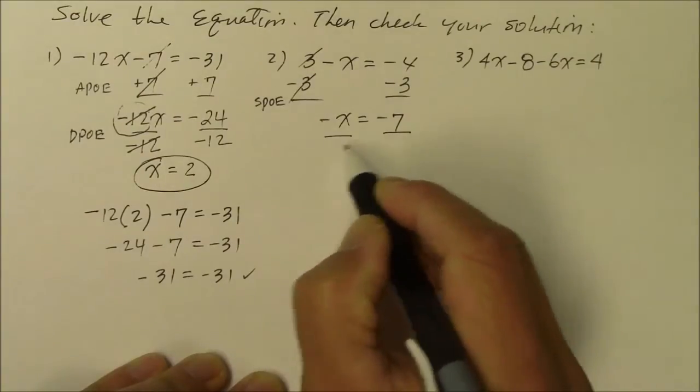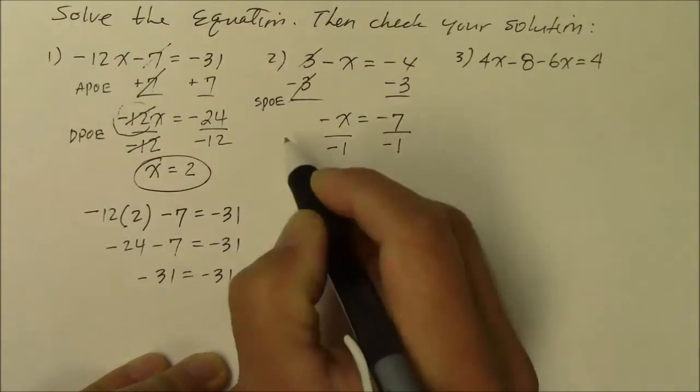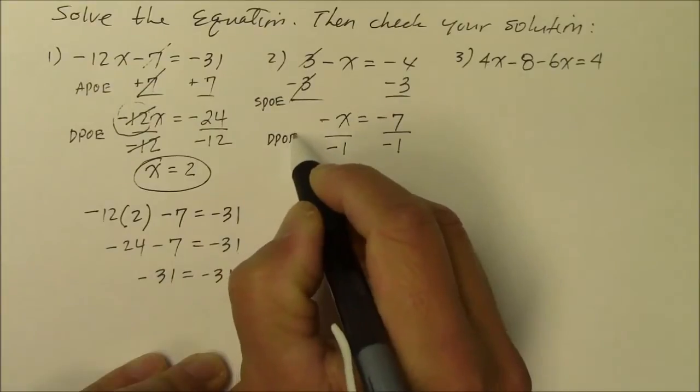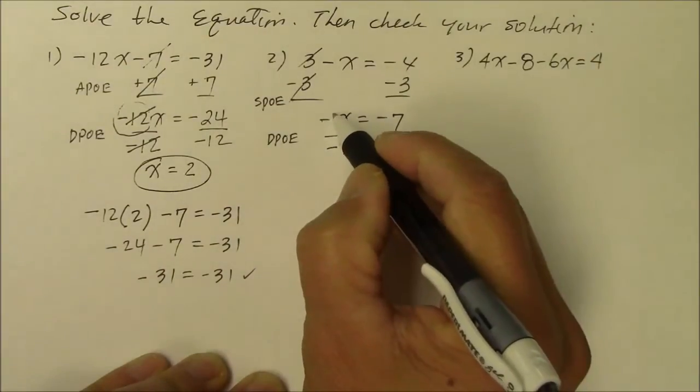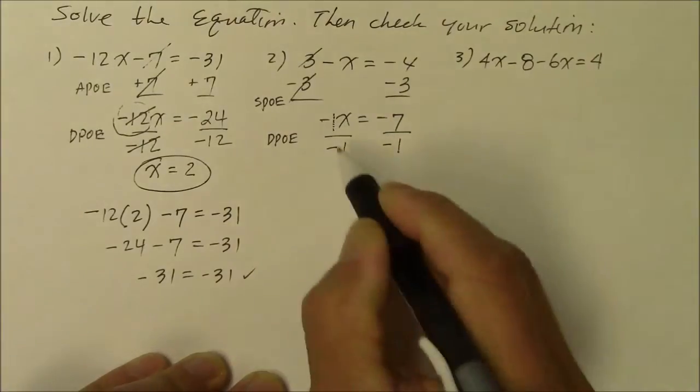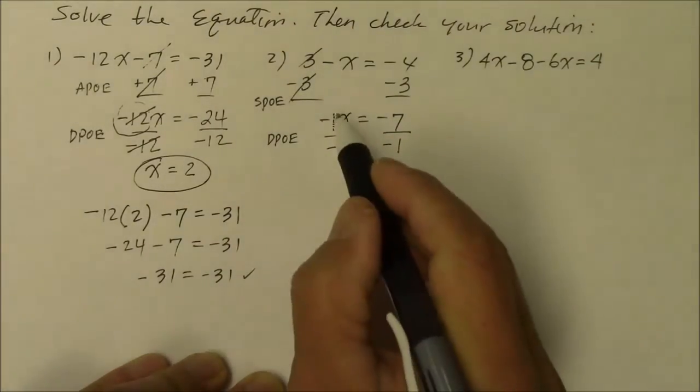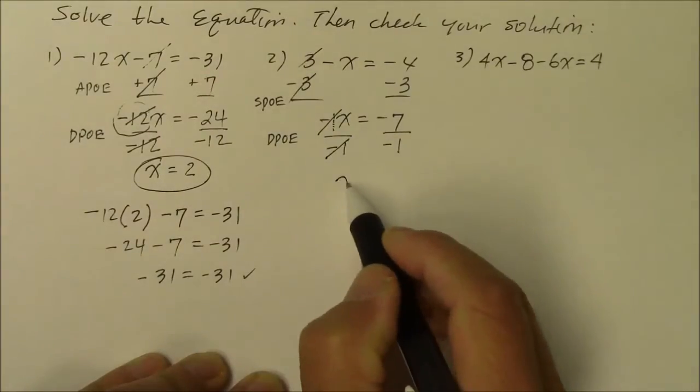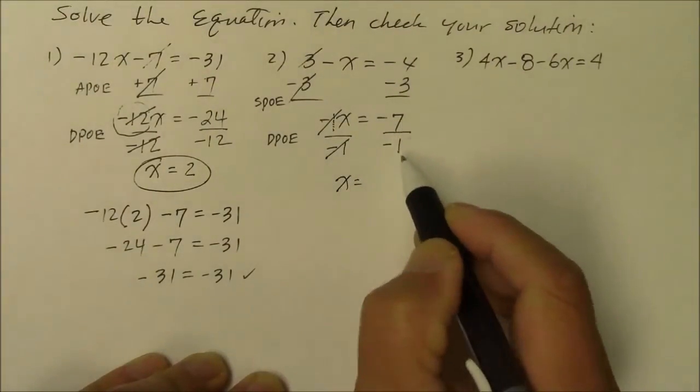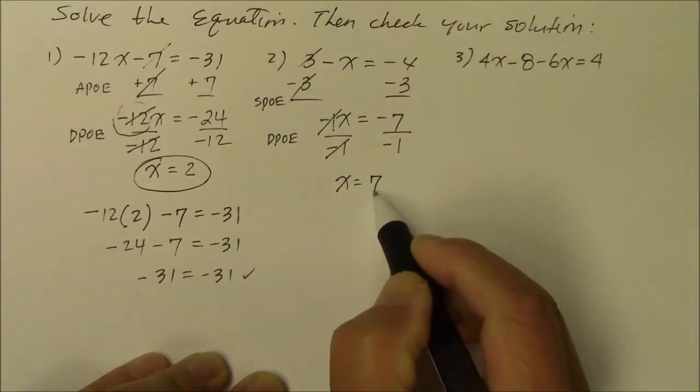So this is division property of equality. So negative 1 invisible. You know what, let me write that there. There's an invisible 1. So negative 1 and negative 1, they simplify to become a positive 1x. And negative 7 divided by negative 1 is positive 7.